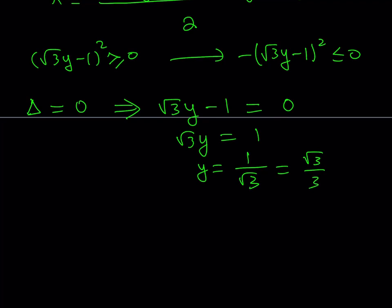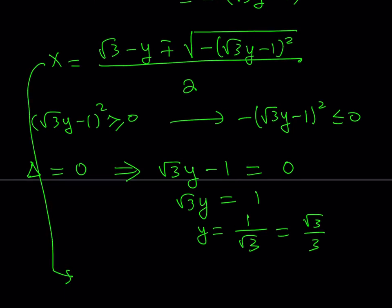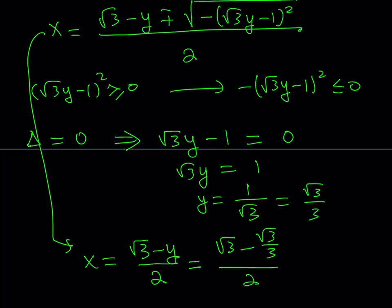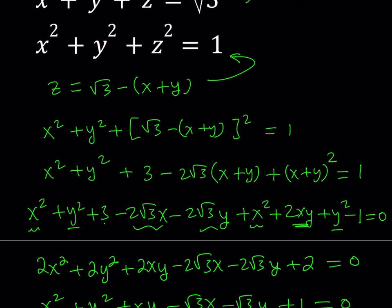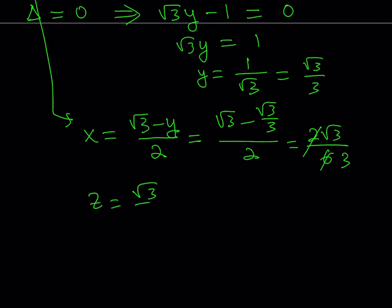Now that we have the y value, we can find x. Since the discriminant is 0, x equals (root 3 minus y) divided by 2, which is (root 3 minus root 3 over 3) all over 2. Making a common denominator: 3 root 3 minus root 3 equals 2 root 3, divided by 3, divided by 2 gives root 3 over 3. By symmetry and substitution back into the original equation, z also equals root 3 over 3.